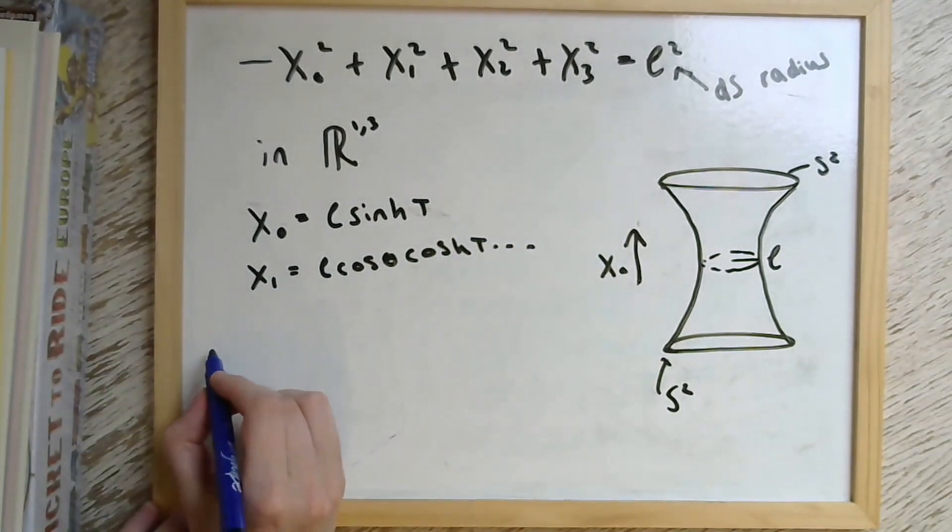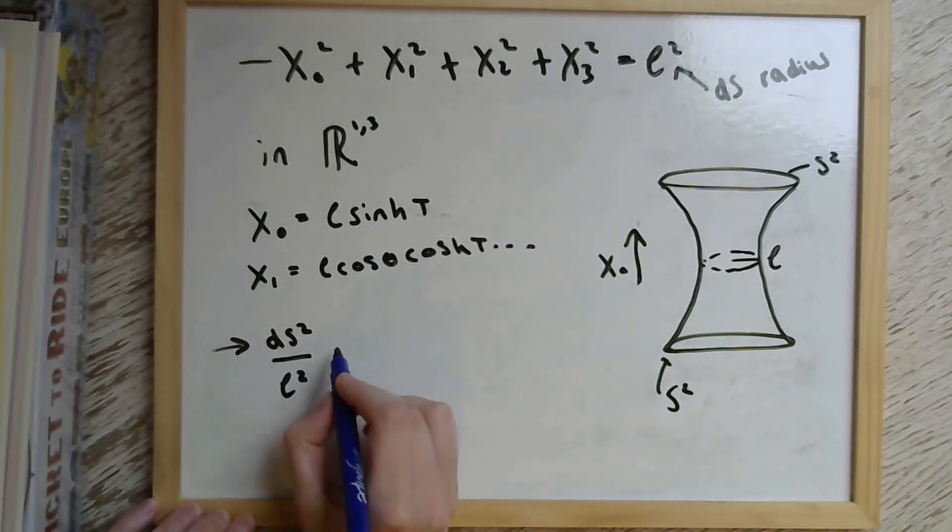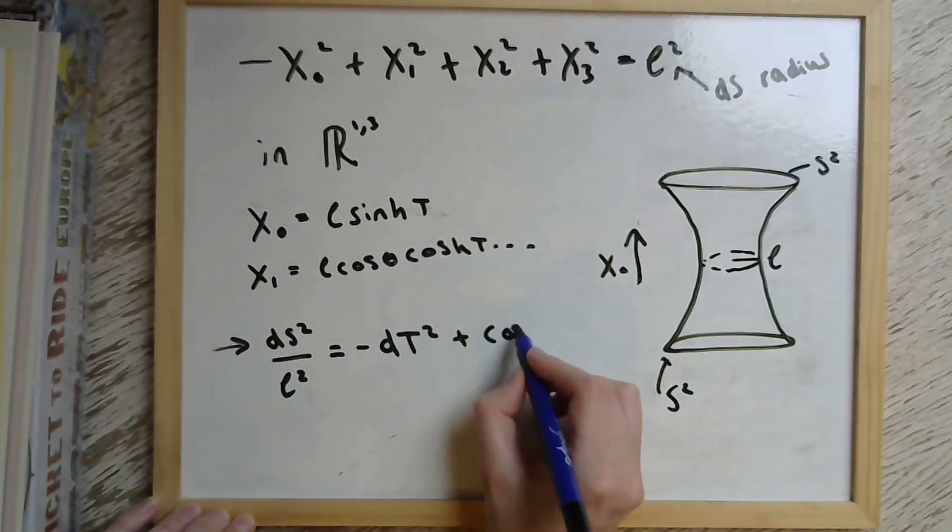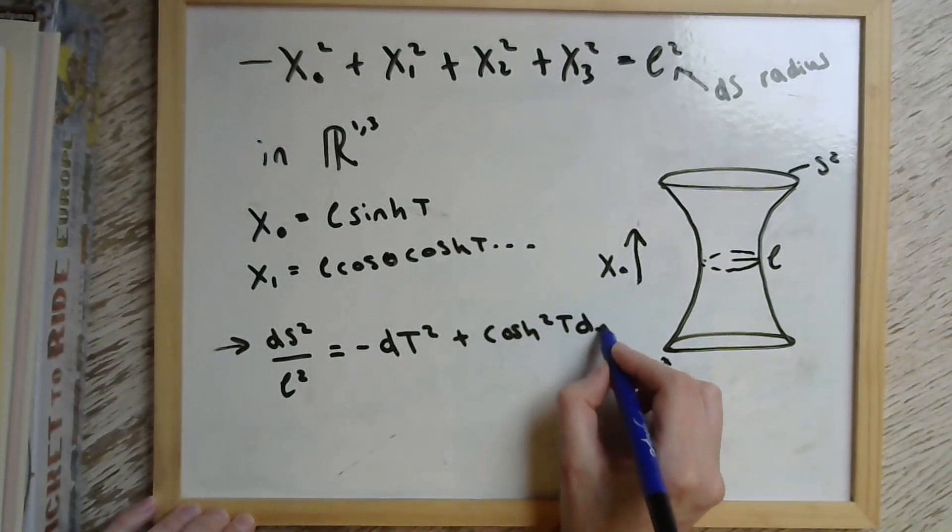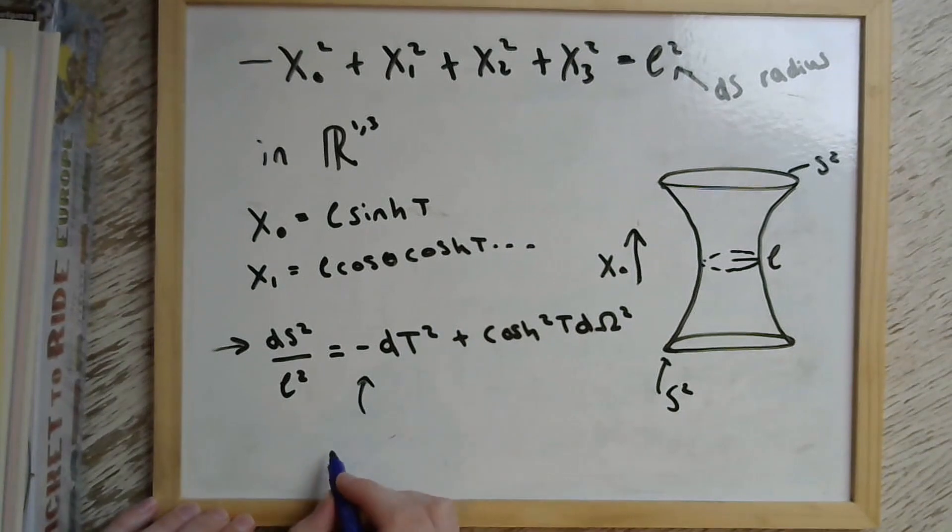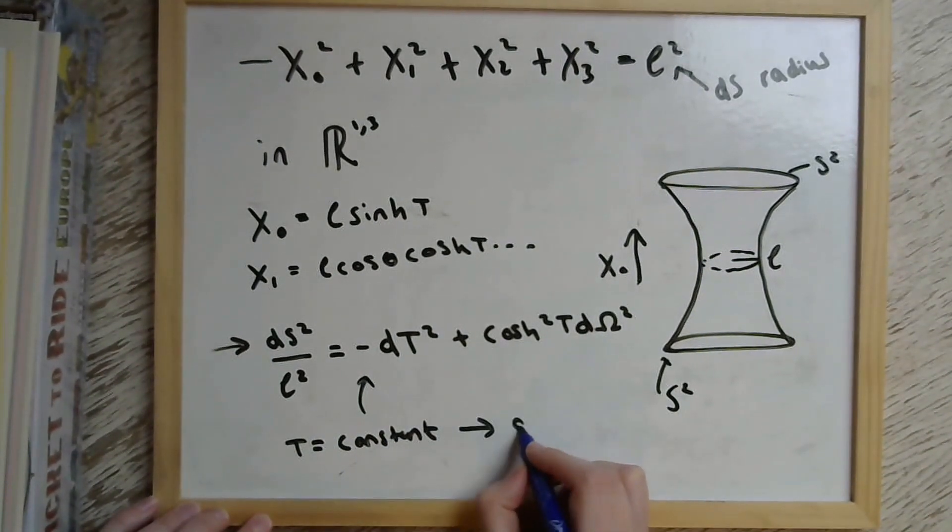And we can use these to write a metric by plugging them into the flat space metric, which looks like this. So it's -dt² + cosh²(t) dΩ², where dΩ² is the round metric on the two sphere. So we can see immediately from this description what I was just saying, which is that constant time slices give us the metric on the two sphere.